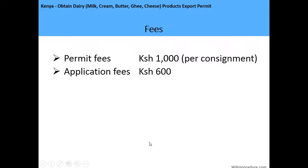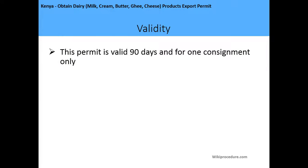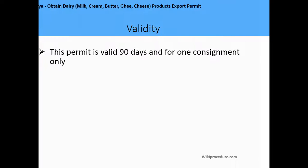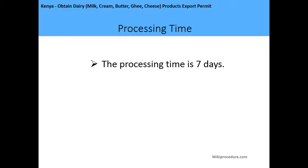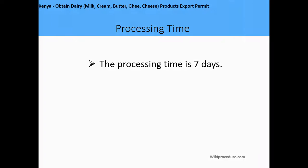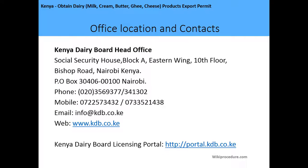In summary: the permit fee is 1,000 shillings per consignment, and the application fee is 600 shillings for inspection of your goods. The validity period is 90 days for one consignment only, so you need to export within three months of making the application. The processing time is a minimum of three days and a maximum of seven days.